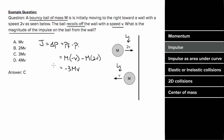And this makes sense. The net impulse has to point in the same direction as the net force. This wall exerted a force to the left. That means the impulse also points left and has a magnitude of 3mv.